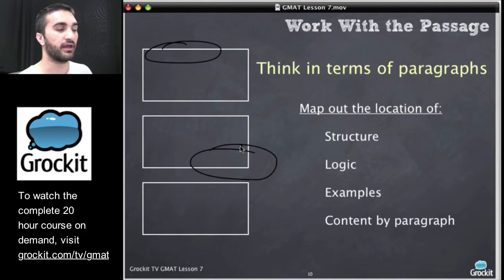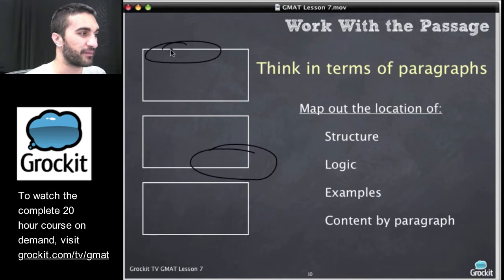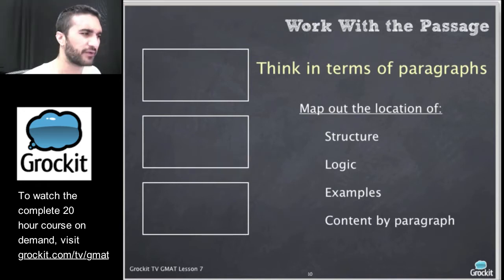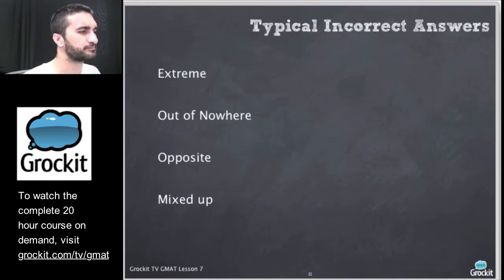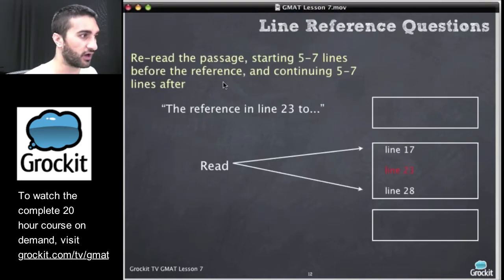But again, as they're constructing the answer choices, and you're just sort of answering off your memory, you'll remember the thing that they talked about here and you'll remember something there, and you'll think, yeah, that's the right answer choice — both of those things were in there. So these are the typical wrong answer choices.